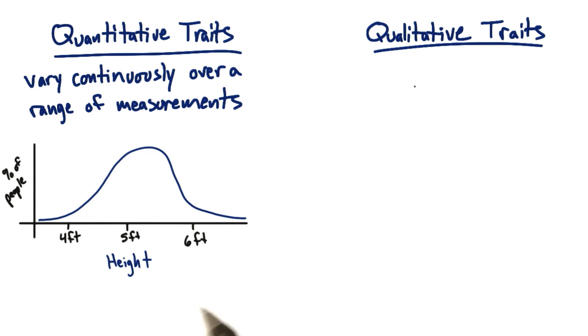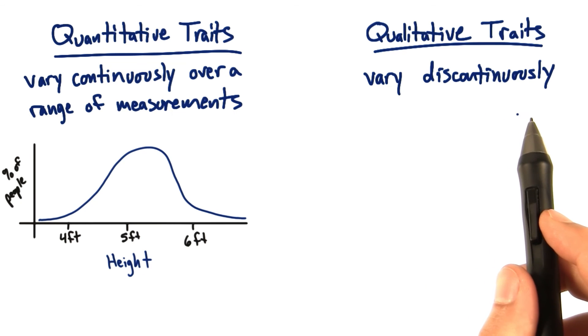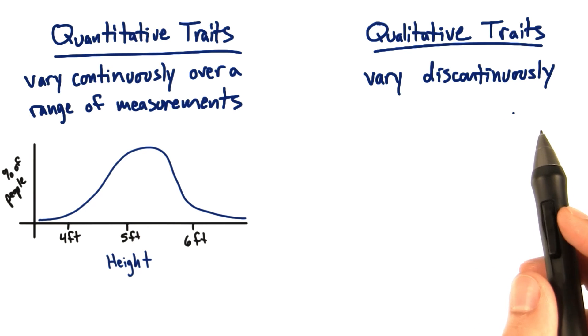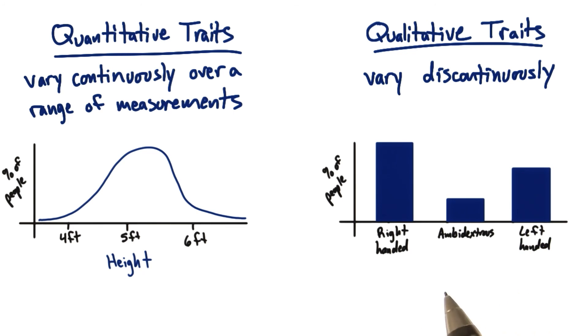Now, qualitative traits don't have this quantitative aspect. Instead, qualitative traits are said to vary discontinuously. They measure the presence or absence of something, maybe a category that something falls into. For example, you may be right or left-handed or maybe ambidextrous, which is a mix of both.